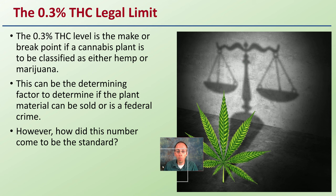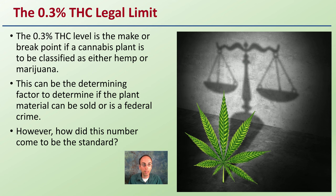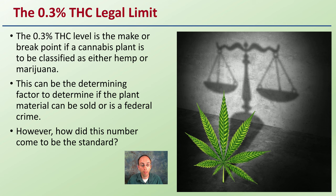That 0.3% THC legal limit is the level that is the make-or-break point if a cannabis plant is to be classified as either hemp or marijuana. This can be the determining factor to basically determine if the plant material can be sold or is a federal crime, at least in the United States.